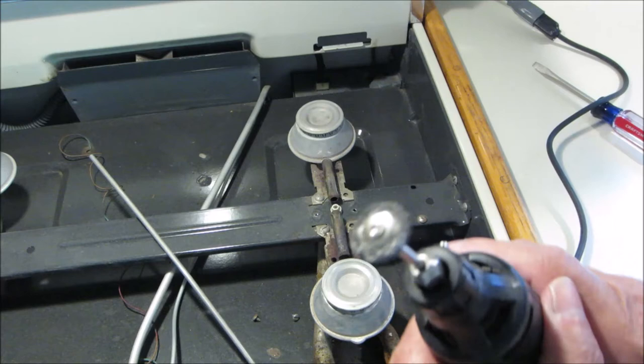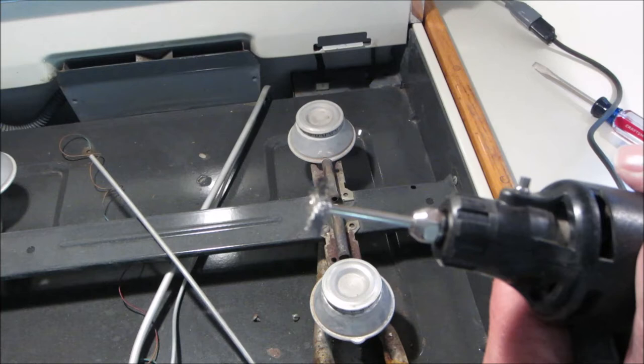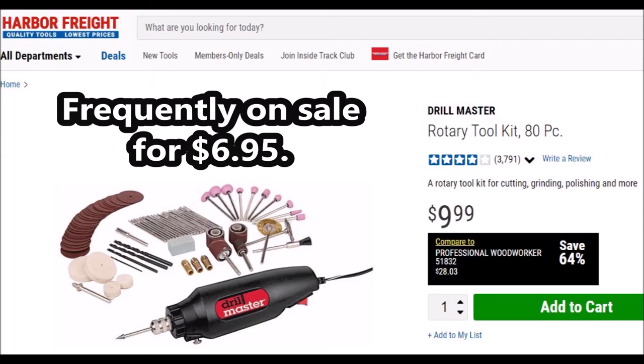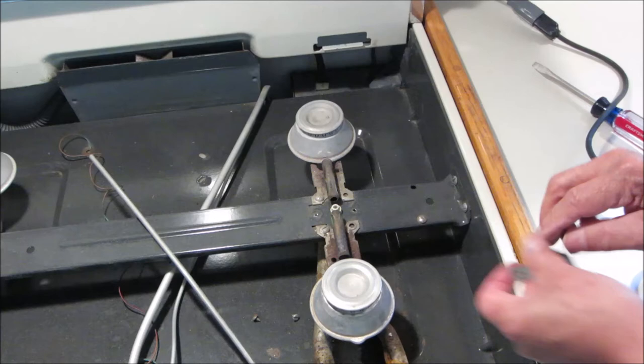Now, regarding the Dremel tool with the wire wheel, this type of wire wheel works a lot better than the original one I was using, which is more like an inverted cup. So if you're going to buy one of these $6 or $7 kit, make sure it has this kind of wheel.